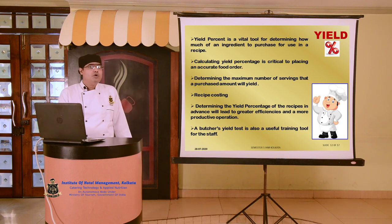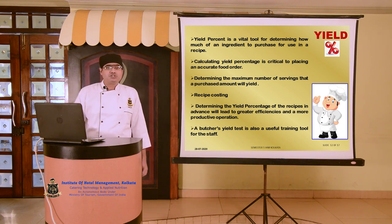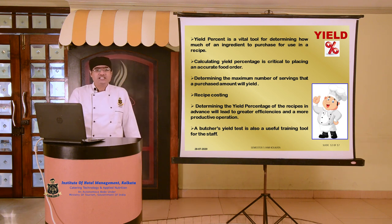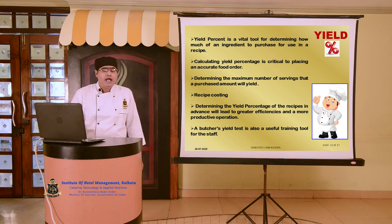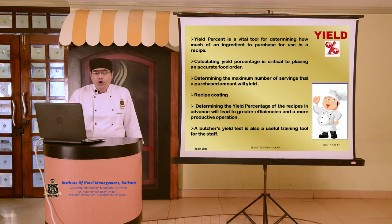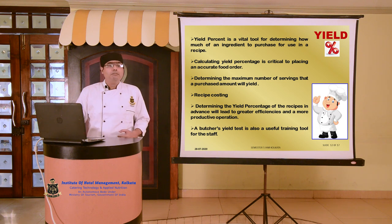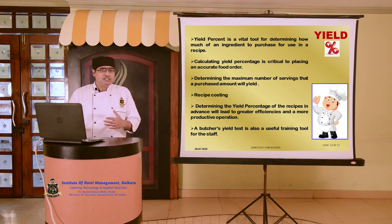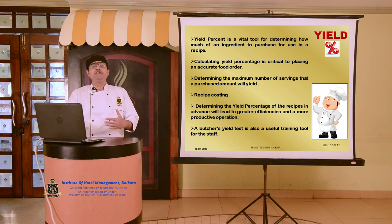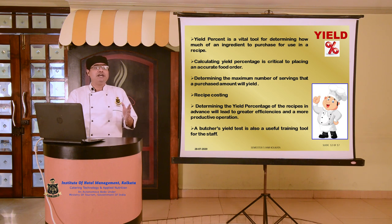Determining the yield percentage of recipes in advance will lead to greater efficiencies and a more productive operation — meaning a more cost-oriented operation where there is cost saving and expenditures are kept to an optimum level without affecting the quality of the final product. When we go for yield tests, we can also have an insight into the level of skill which the manpower possesses. As discussed regarding pre-cooking yield or butcher's yield, an efficient hand will lead to much less trim. If not up to the mark, it clearly indicates the extent of training required to bring that person to the standard yield.